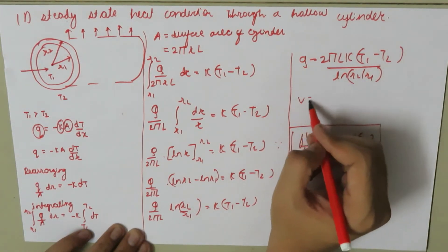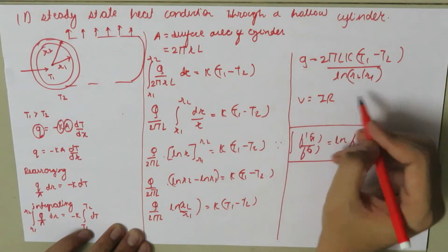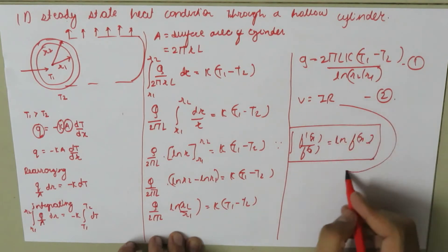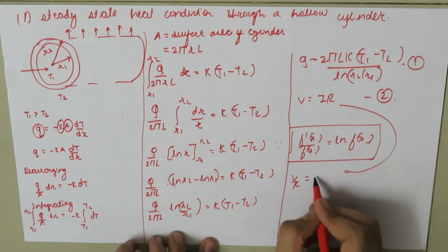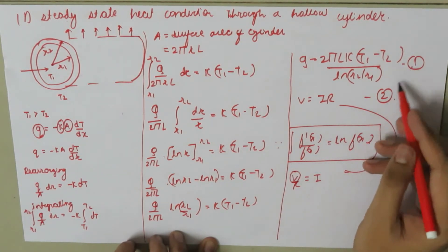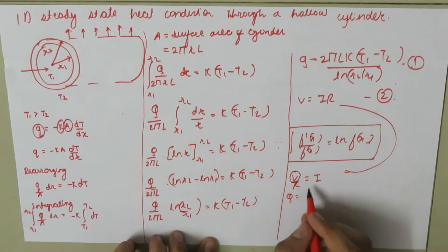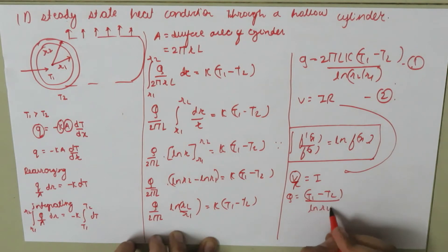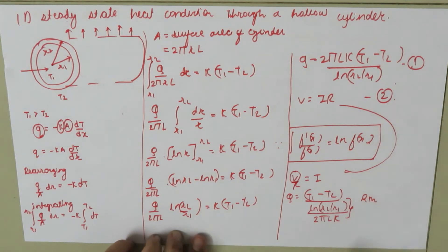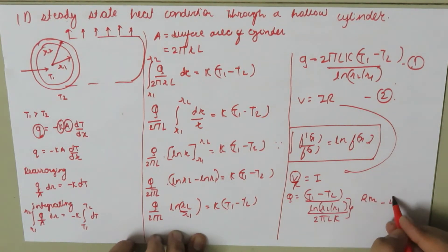We know from Ohm's law that V equals I times R, or V/R equals I, where V is the potential difference. Comparing this with our heat equation, Q equals (T1 minus T2) divided by [ln(R2/R1) / (2πLK)]. This term ln(R2/R1) / (2πLK) is the thermal resistance.